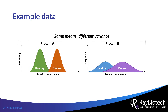The distributions between healthy and diseased patients for protein A and protein B have the same difference in means, but have different variances. Which protein is more statistically different between the two groups? That's right — protein A.